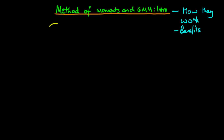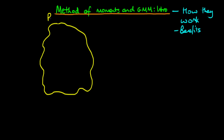The idea in method of moments estimators is that we have some sort of population. Within that population, we know from theory that there are some defined conditions. An example of a condition might be that in the population, the expected level of some random variable x is equal to mu, some parameter.